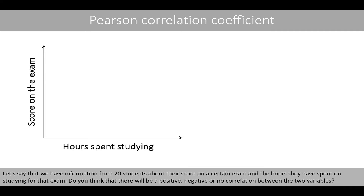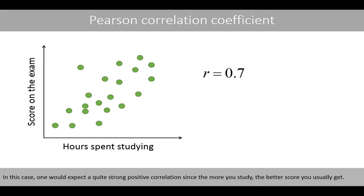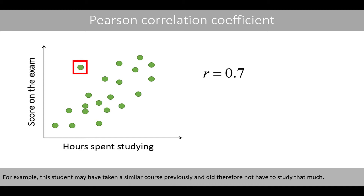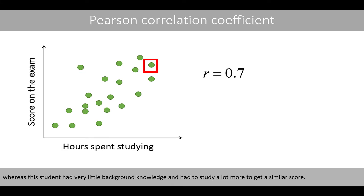Let's say we have information from 20 students about their score on a certain exam and the hours they have spent studying for that exam. One would expect a quite strong positive correlation since the more you study, the better score you usually get. However, since students have different amounts of background knowledge, we do not expect a perfect positive correlation. For example, one student may have taken a similar course previously and not had to study that much, whereas another student had very little background knowledge and had to study a lot more to get a similar score.